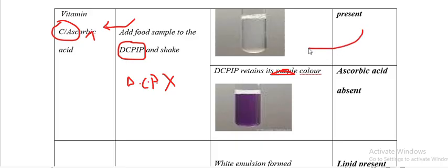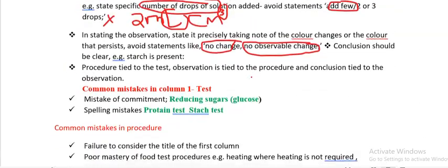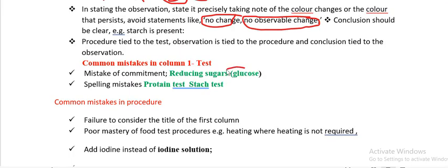The conclusion is tied to the observation — if the observation is wrong, the conclusion will also be wrong. Common mistakes in column 1 (food substance column): writing 'reducing sugars' with 'glucose' in brackets — that is wrong. Spelling mistakes for words like 'protein' and 'starch' should be avoided.